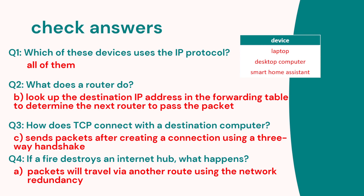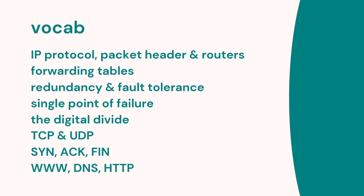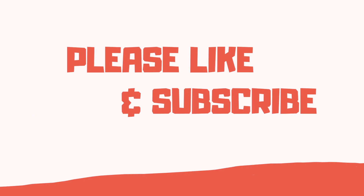Let's look at the answers. Which devices use the IP protocol? All of them do. What does a router do? The correct answer is that it looks up the destination IP address in a forwarding table to determine how to pass the packet to the next router. How does TCP connect with a destination computer? It uses the three-way handshake. If a fire destroys an internet router, what happens? The packet should be able to travel via a different route because the network has redundancy. Check your vocabulary — if you don't understand any terms, go back and review the relevant parts of the video.